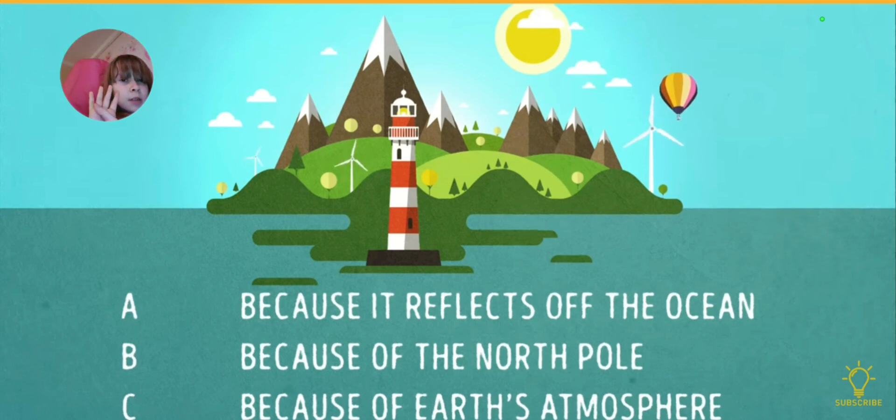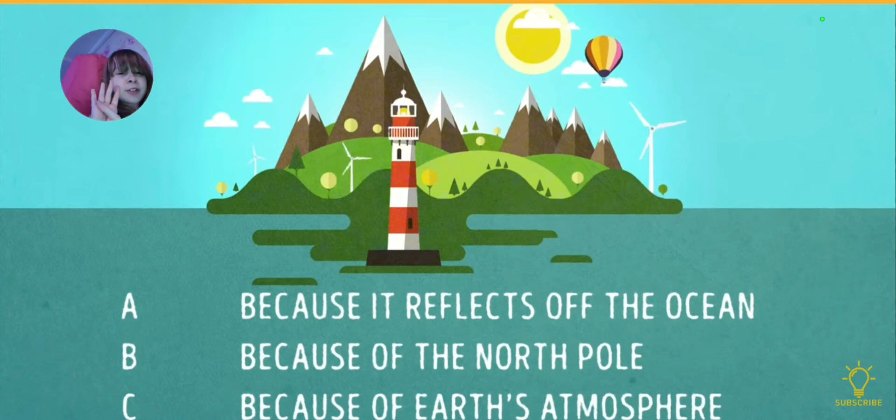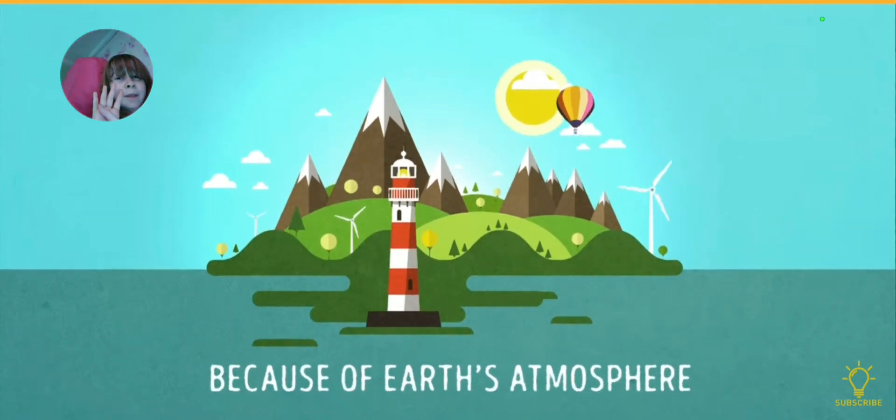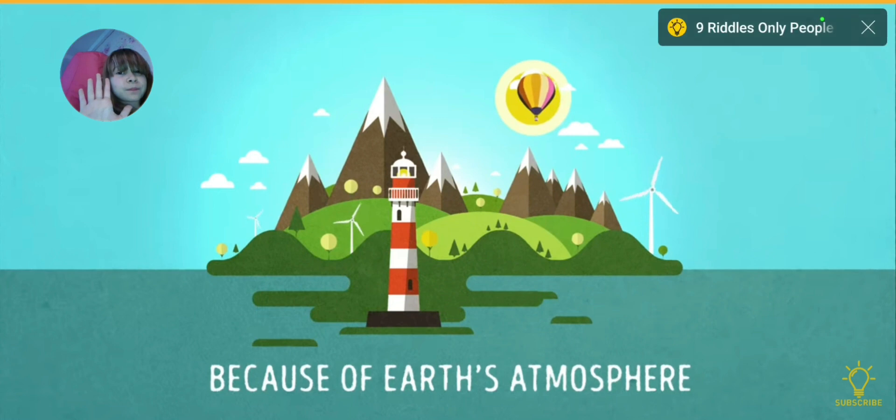Number 6. Why is the sky blue? A. Because of Earth's atmosphere, I think. B. Because of the North Pole. C. Because of Earth's atmosphere. The right answer is C. The thing is light that comes from the sun scatters in the atmosphere of our planet. Shorter waves scatter more, that's why all we have left from visible light is the blue color.